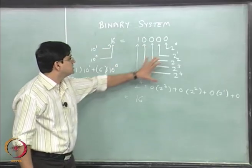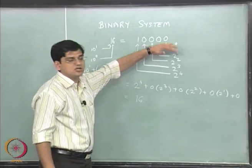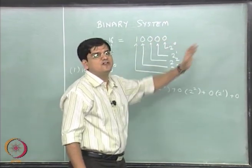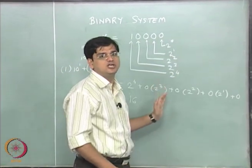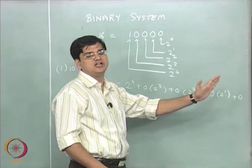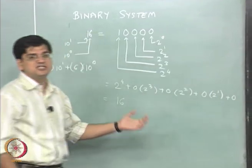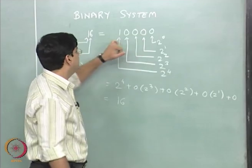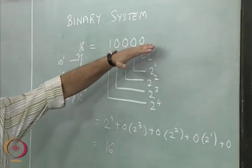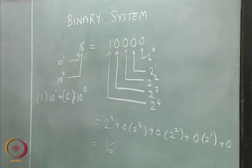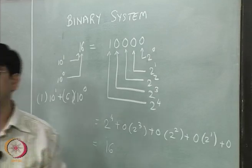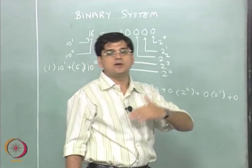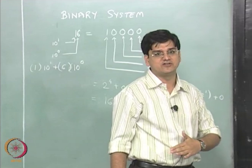This is how essentially the integer numbers are going to be represented if we are only interested in 0 and positive integer numbers. If we are interested in negative integer numbers also, in addition to these 5 digits, we will require one more digit to represent whether it is a positive number or a negative number.